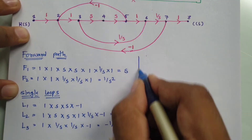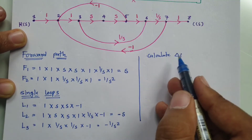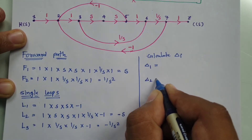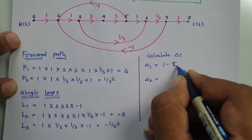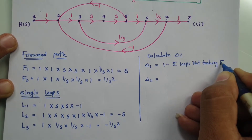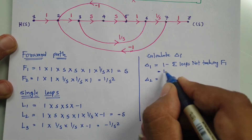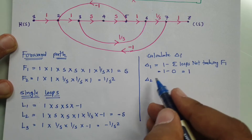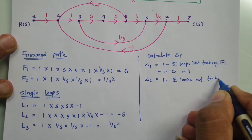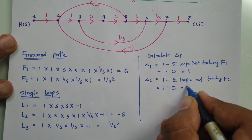Next we calculate delta-I based on each forward path. For delta-1, we take 1 minus the summation of loops not touching path F1. Since all loops touch F1, that is 1 − 0 = 1. For delta-2, similarly all loops touch path F2, so delta-2 = 1 − 0 = 1.